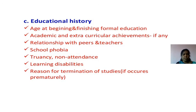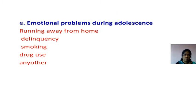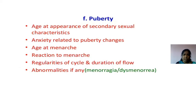Educational history: age at beginning and finishing formal education, academic and extracurricular achievements, relationship with peers and teachers, school phobia, non-attendance, learning disabilities, and reason for any termination of studies. Play history: what type of games, and the relationship with playmates. Emotional problems during adolescence: running away from home, delinquency, juvenile delinquency, smoking, drug abuse, or any other problems.